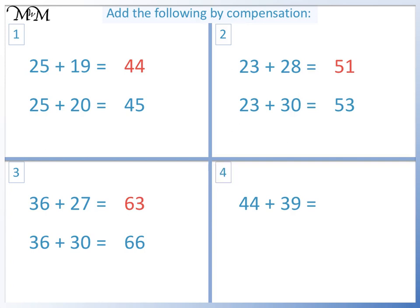Question 4: 44 plus 39. We can add 1 to 39 to make 40. 44 plus 40 equals 84. Because we added 1 to the question, we need to subtract 1 from our answer. So 44 plus 39 equals 83.